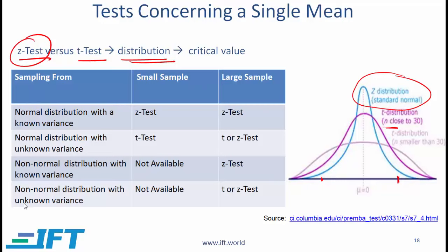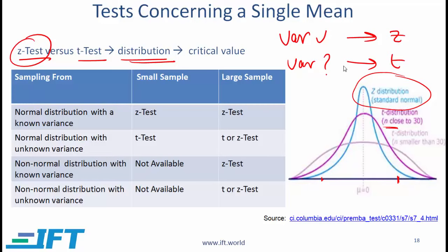Here is a table that should look familiar because we used this exact same table in the previous reading. The quick summary is that if the variance is known, then you use the Z test. If the variance is not known, then you use the T test. That is the high-level summary and further details are fairly obvious in this table. Since we've gone over this before, I will not repeat.